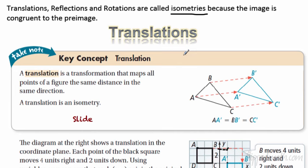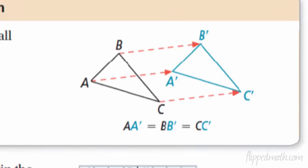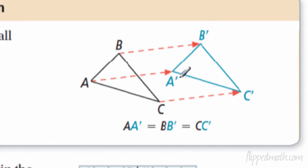Here is the formal definition: a translation is a transformation that maps all the points of a figure the same distance in the same direction — think of it as a slide. For notation, point B maps to B-prime, point A maps to A-prime. That little apostrophe mark is called 'prime' — like Optimus Prime. The distance from A to A-prime equals the distance from B to B-prime, and so on.